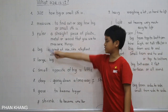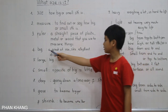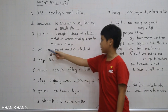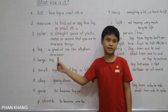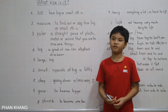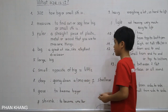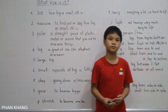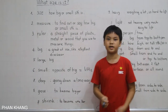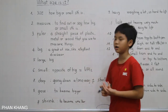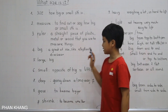Next is big. Big is an adjective. Big means a great size, like an elephant or a dinosaur. We might say 'An elephant is very big' or 'A dinosaur is very big.' There is also bigger. Bigger is the comparative form of big.